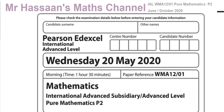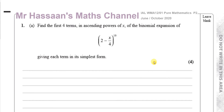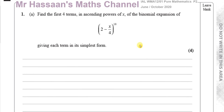Question number one is about binomial expansion. It says: find the first four terms in ascending powers of x of the binomial expansion of this bracket.